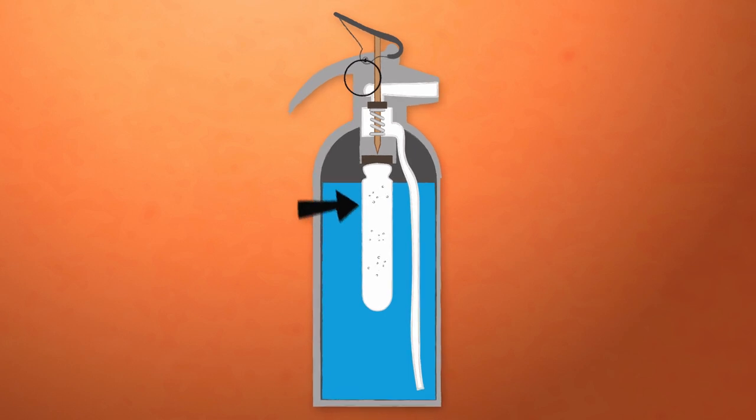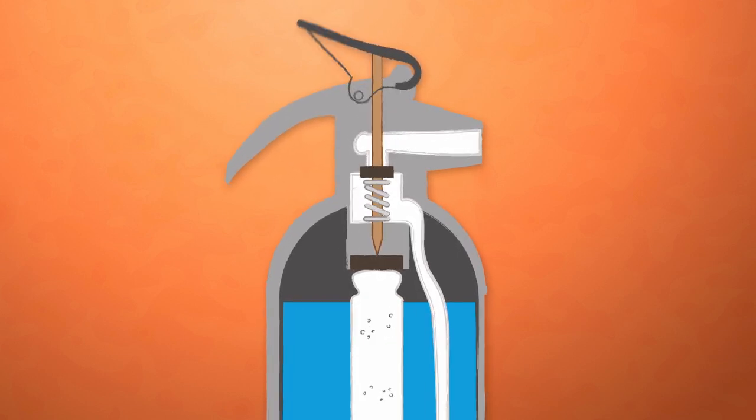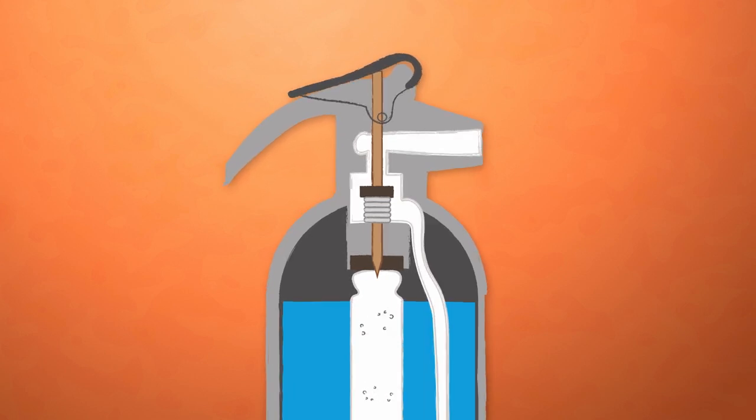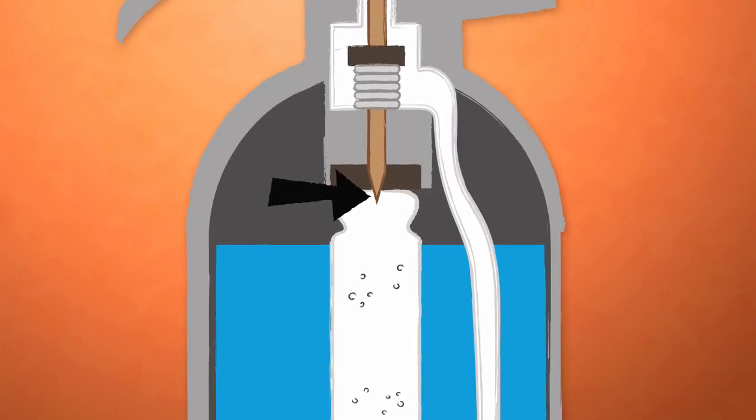A release valve keeps the compressed gas from escaping. When you pull out the safety pin and depress the operating lever, it pushes on an actuating rod. The rod presses the spring-mounted valve down to open up the passage to the nozzle. The bottom of this actuating rod has a sharp point which pierces the gas cylinder release valve.